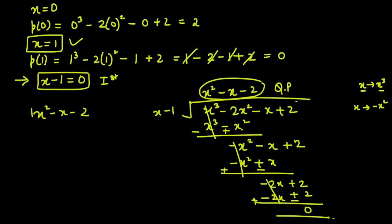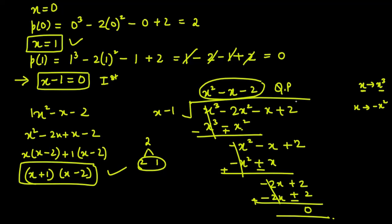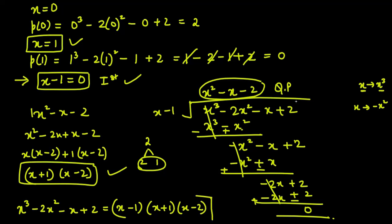For x square minus x minus 2, the product of first and last coefficients is 1 × 2 = 2. Factors of 2 are 2 and 1. We need to use them to get minus 1, so we write x square minus 2x plus x minus 2. From the first two terms take common x, and from the last two terms take common 1. We get x(x minus 2) + 1(x minus 2), giving factors (x + 1) and (x minus 2). So the complete answer for a cubic polynomial gives 3 factors: (x minus 1)(x plus 1)(x minus 2).